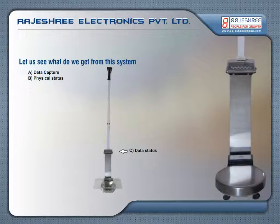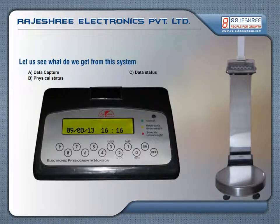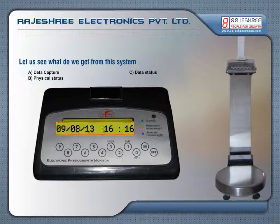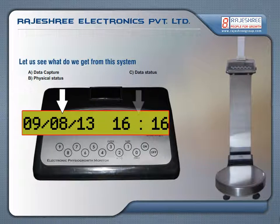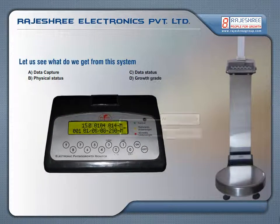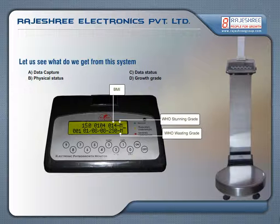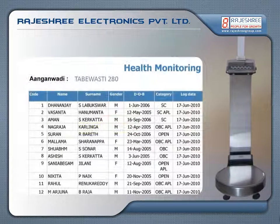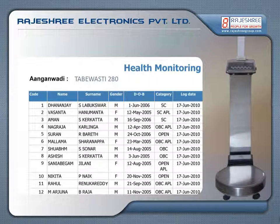Data status is made possible by the built-in RTC (Real Time Clock), which gives time and date-wise data status. Growth grade and BMI of the beneficiary are obtained by computing physical status data as per the WHO-formulated data sheet, generated to identify malnutrition in the beneficiary as per age, gender, area, and category.